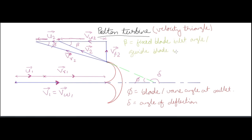In the velocity triangle, v1 equals vw1, meaning absolute velocity at inlet equals whirl velocity at inlet. u1 is the blade velocity at inlet, and vr1 is the relative velocity at inlet. At outlet we similarly have vr2, v2, vf2, vw2, and u2. Here vw2 is the whirl velocity at outlet and vr2 is the relative velocity at outlet.